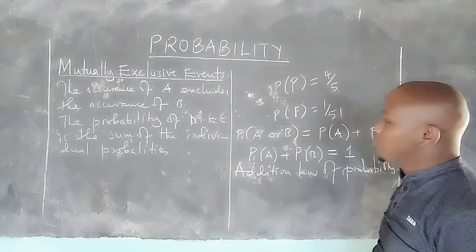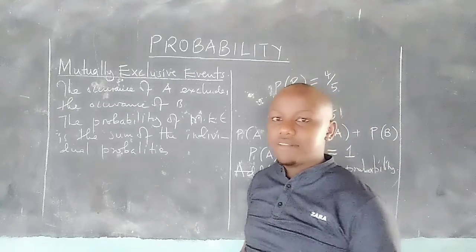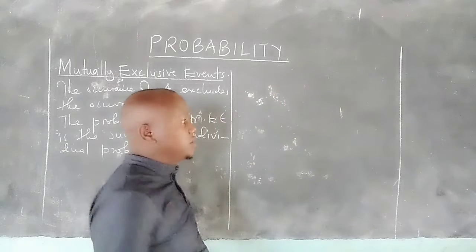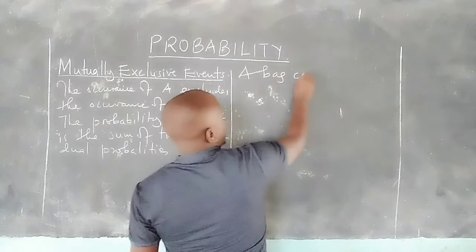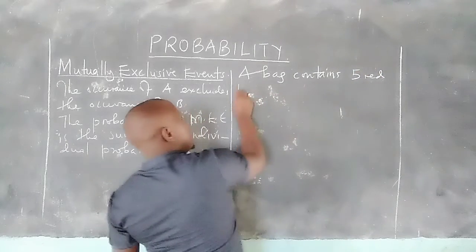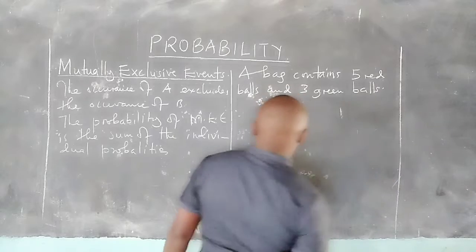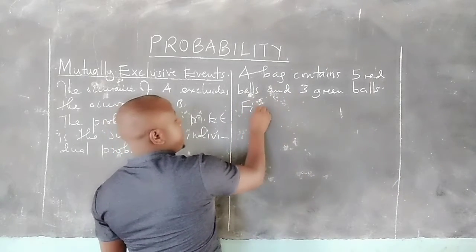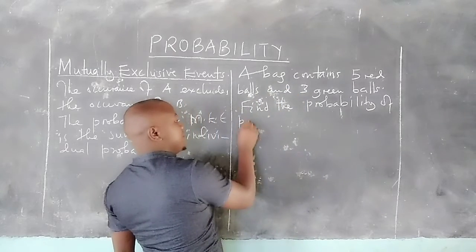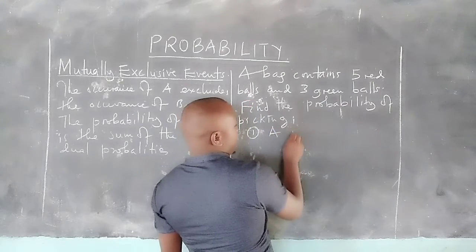So that is what we call mutually exclusive events. Let's take an example. A bag contains five red balls and three green balls. Find the probability of picking a red ball.